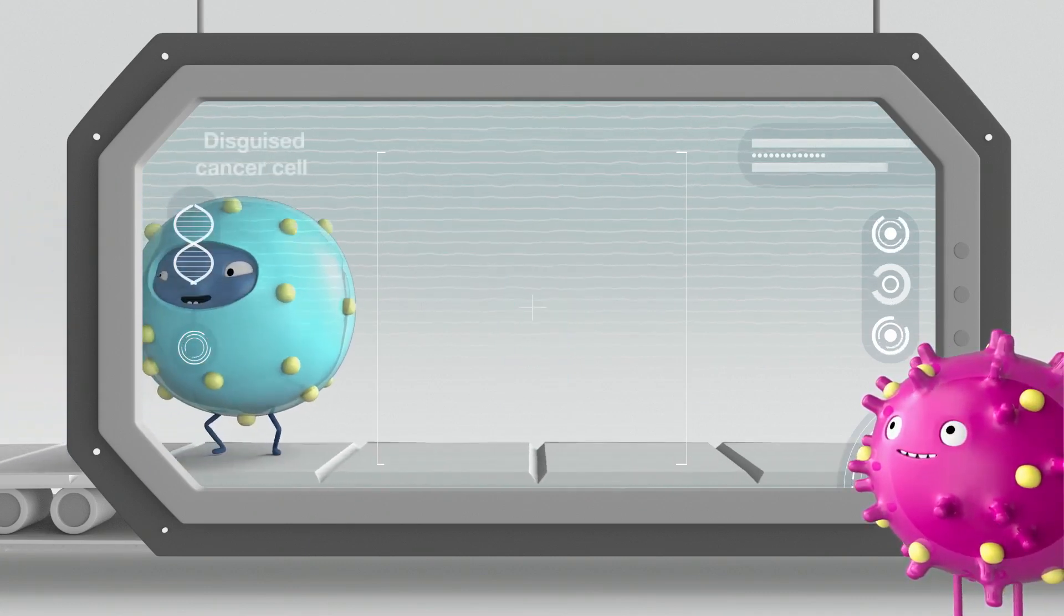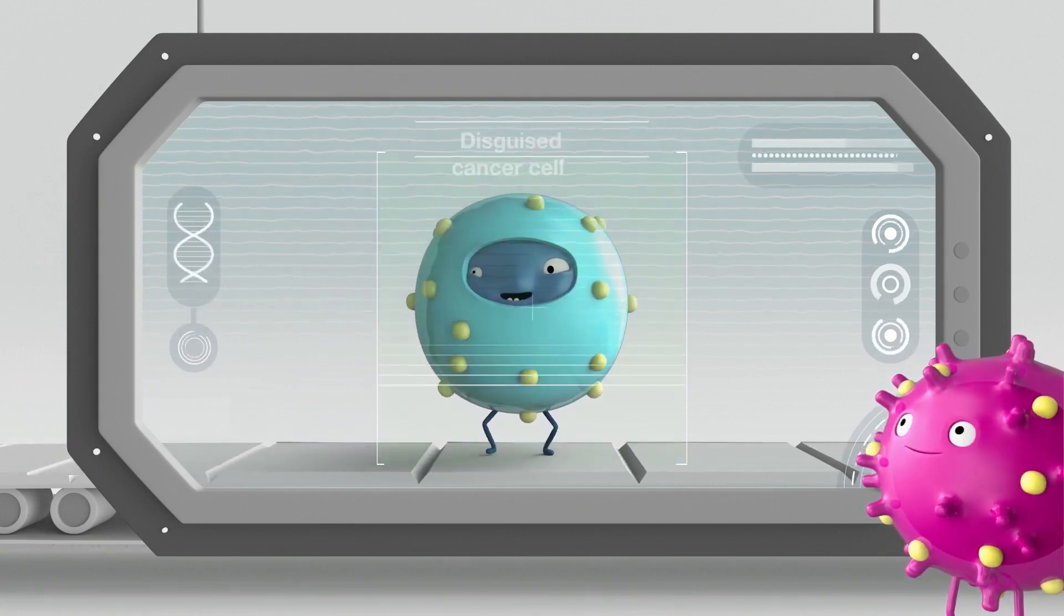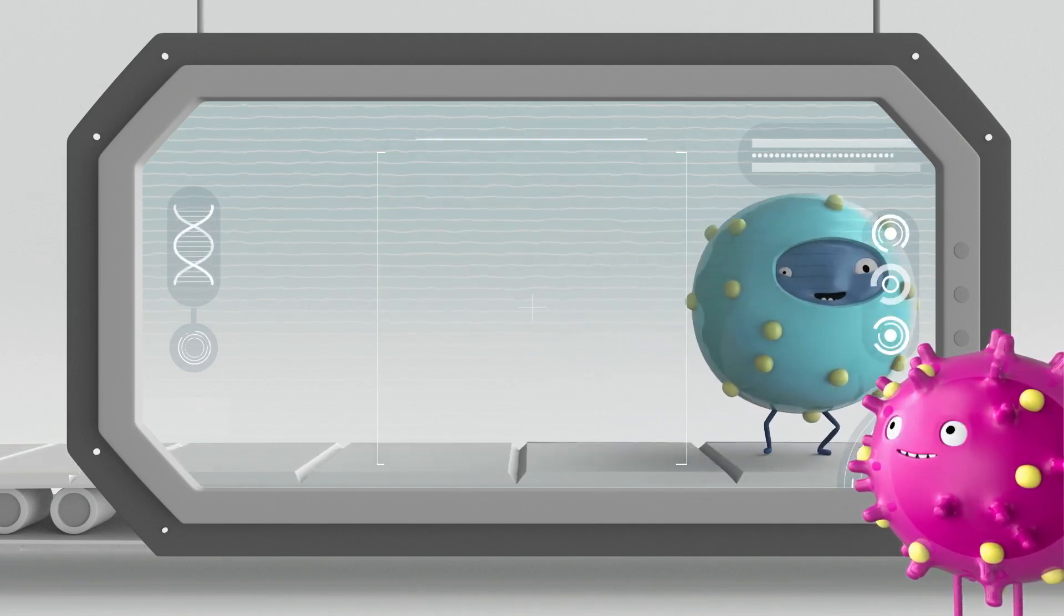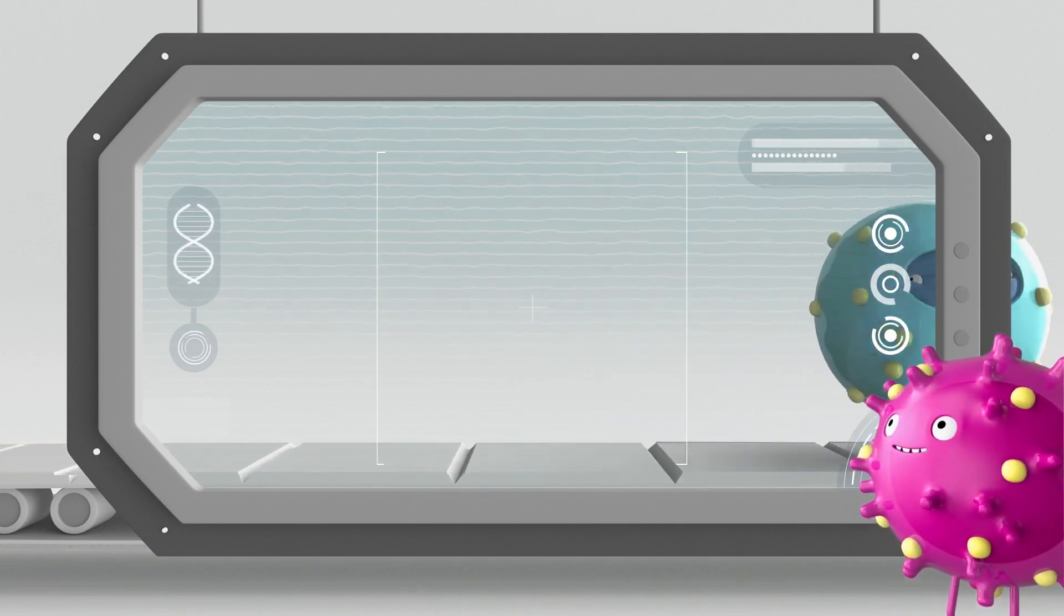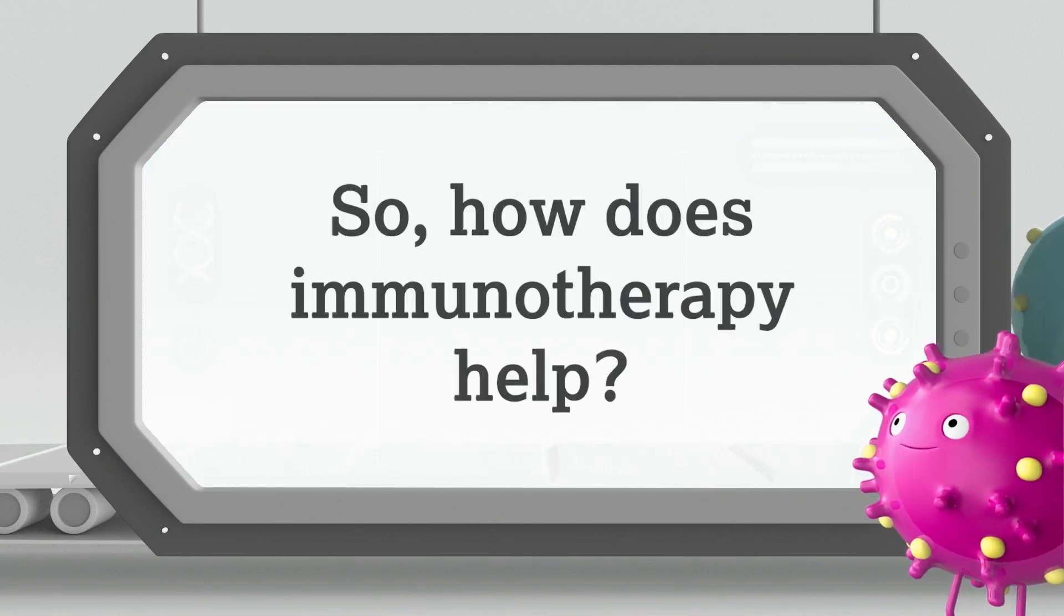Unfortunately, some cancer cells are smart and can use these same checkpoints to their own advantage. This allows cancer cells to hide from your immune system and avoid being destroyed. So, how does immunotherapy help?